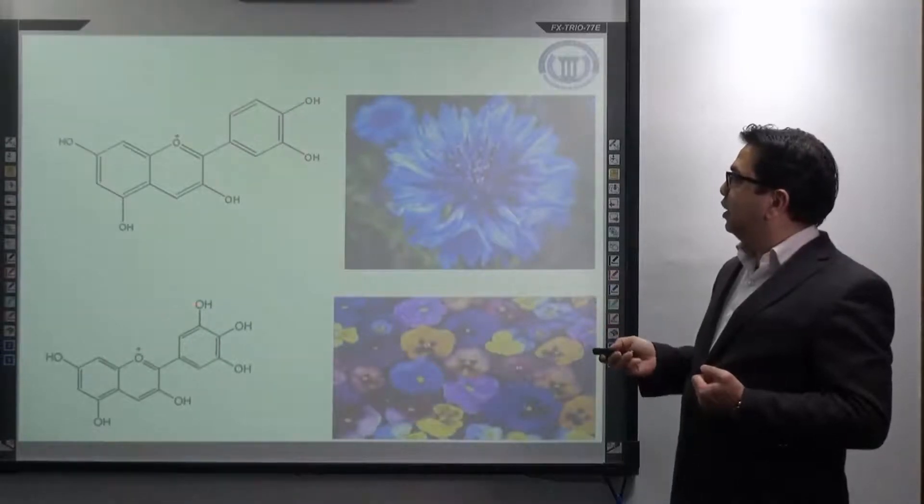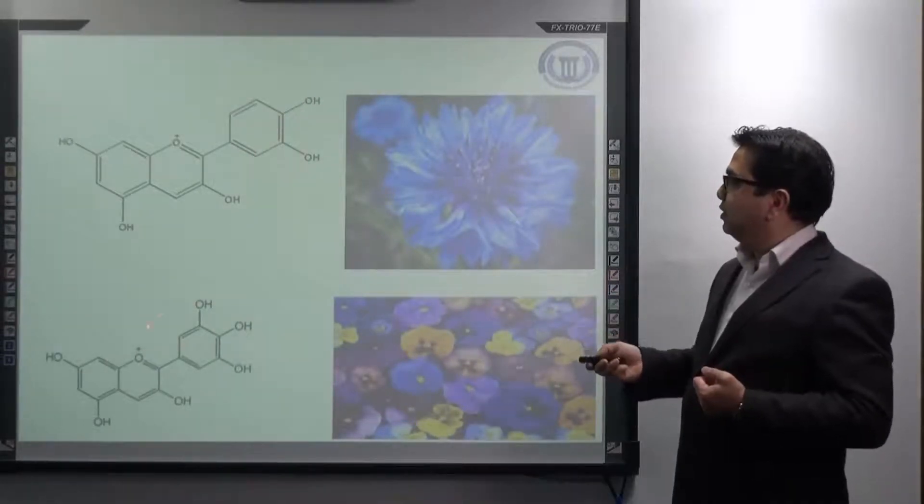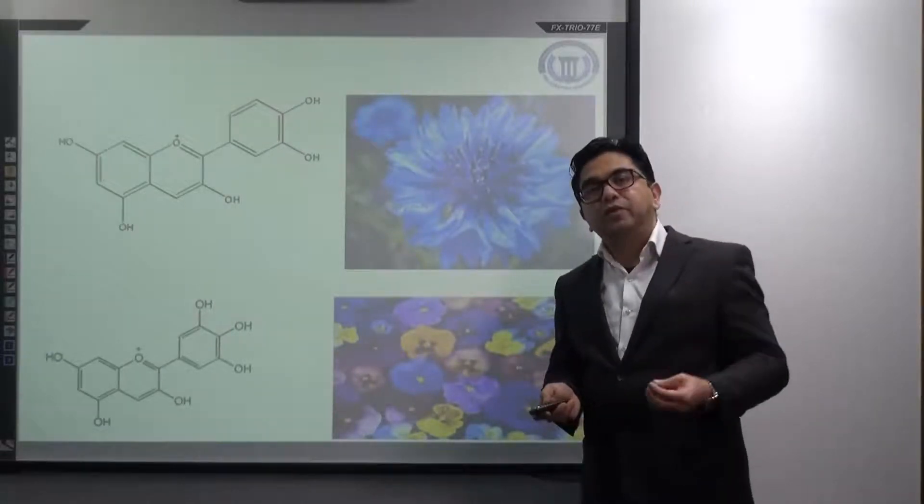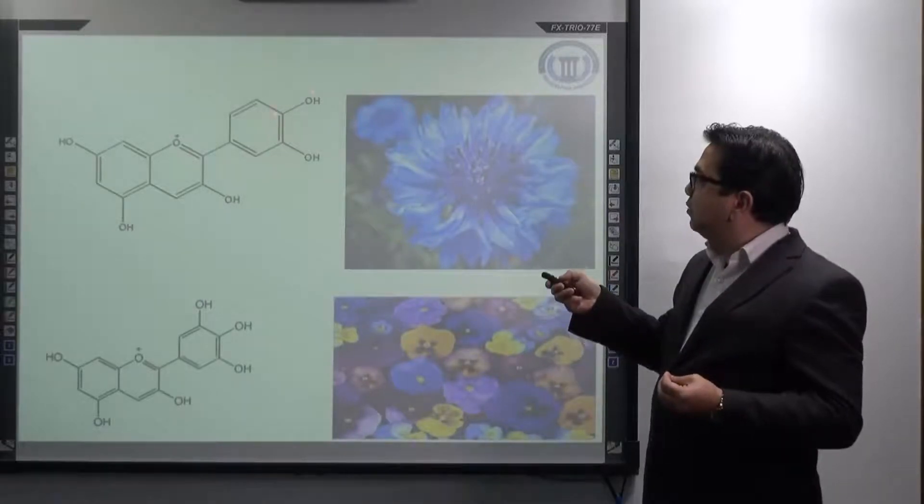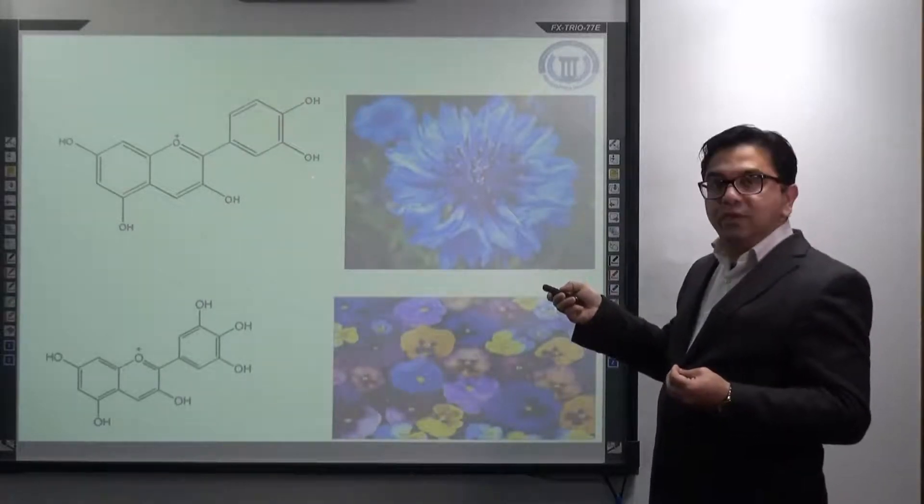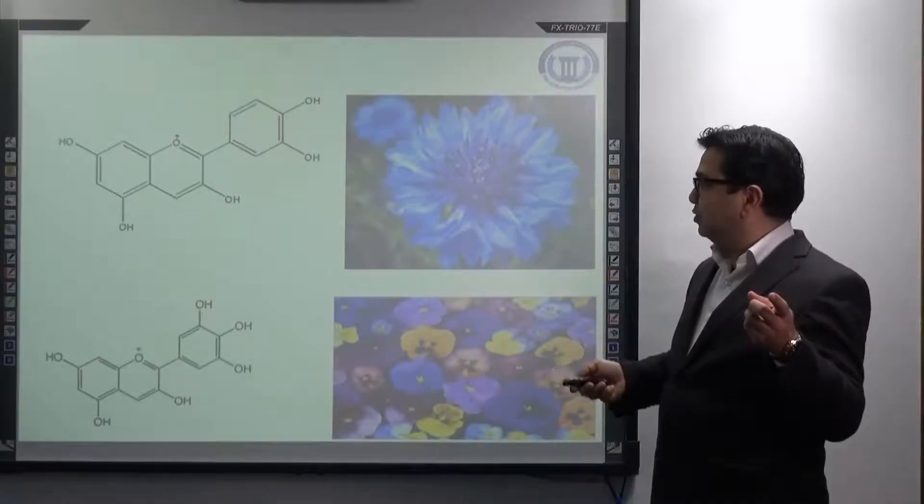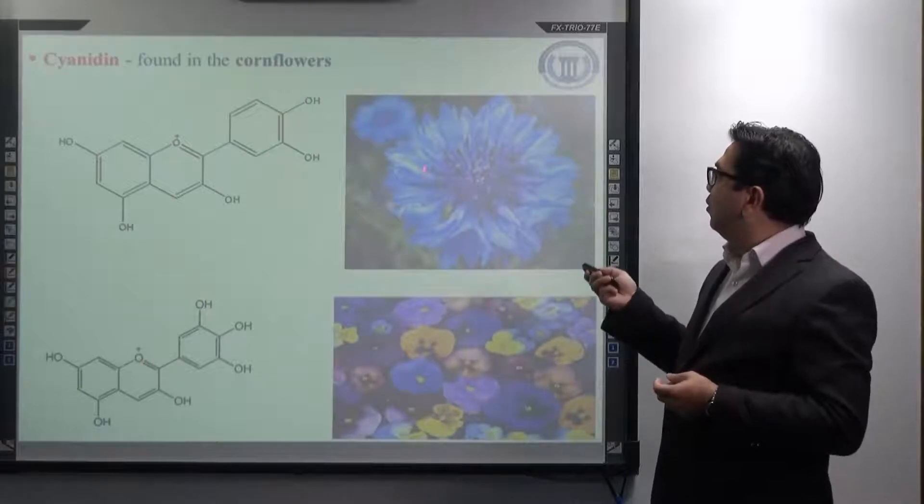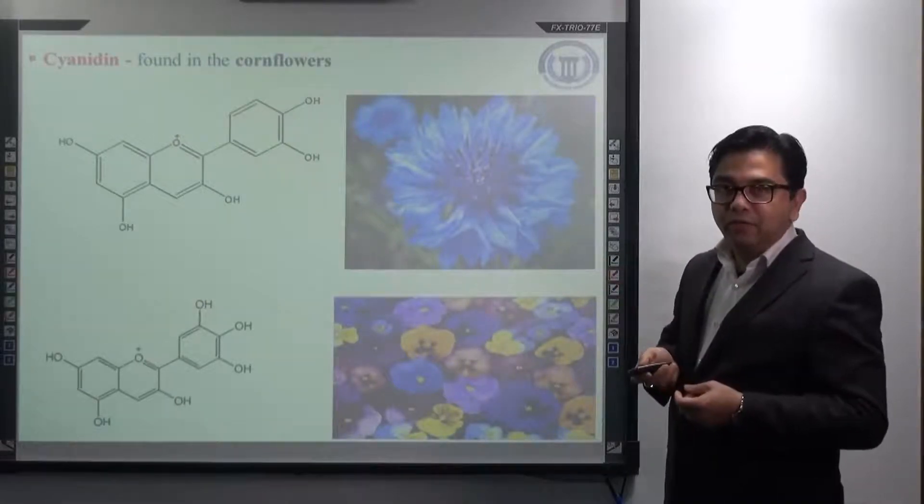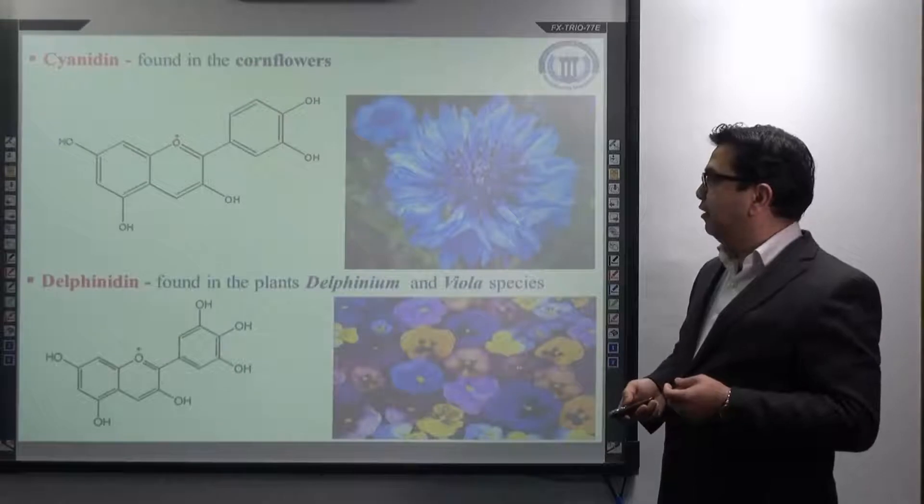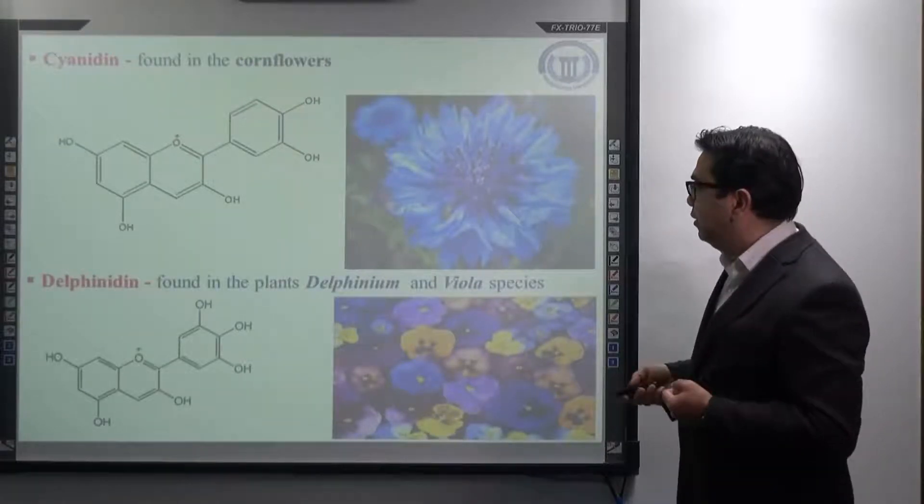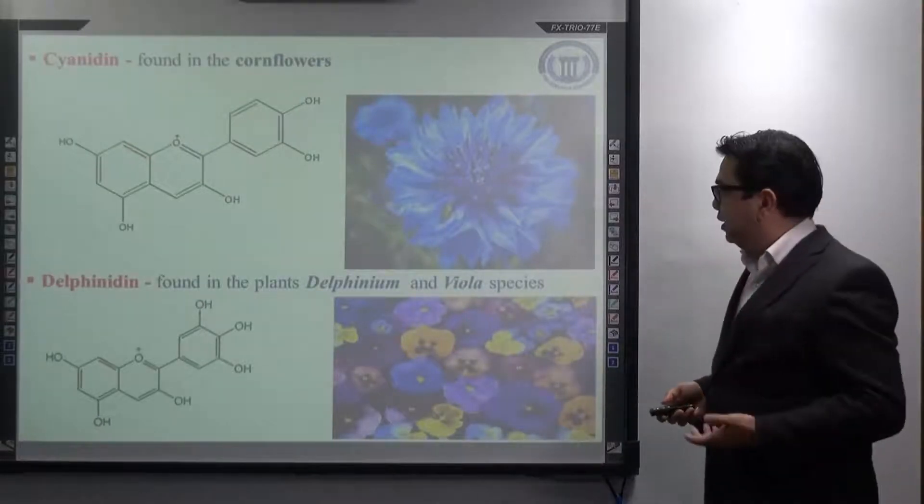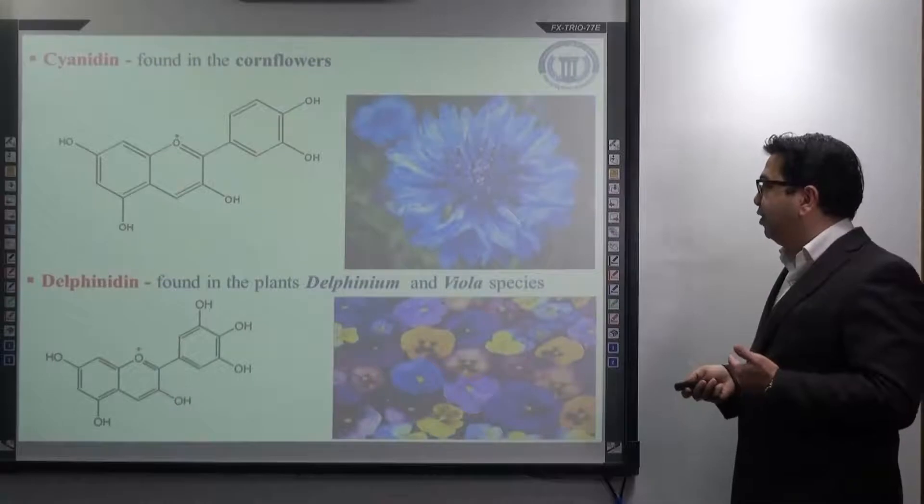Now, look at the structure, these two structures. Can you tell me what is the name of this first one and the second one? If you look at the difference, both of them differ only in the number of hydroxyl groups present in ring B. The first one contains two hydroxyl groups as compared to pelargonidin. This one contains three hydroxyl groups. The name of this is cyanidin which is found in corn flour. This is the picture of a corn flour and the next one is delphinidin which is found in the plant of delphinium and viola species. These are the flowers which represent the delphinium and viola species.